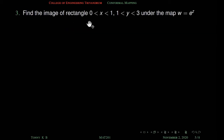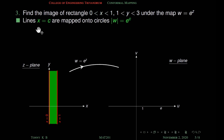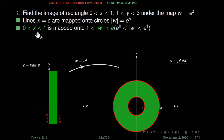Find the image of the rectangle 0 ≤ x ≤ 1, 1 ≤ y ≤ 3 under the mapping w equal to e raised to z. The region 0 ≤ x ≤ 1 is an infinite strip between x equal to 0 and x equal to 1. Since lines x equal to c are mapped onto circles modulus w equal to e raised to c, the region between x equal to 0 and x equal to 1 is mapped onto 1 less than modulus w less than e, where 1 corresponds to e raised to 0 and e corresponds to e raised to 1. So this green region is mapped onto this green annular region.